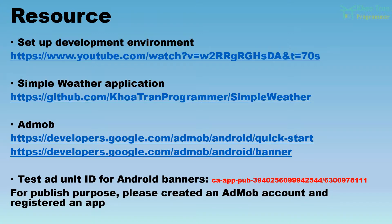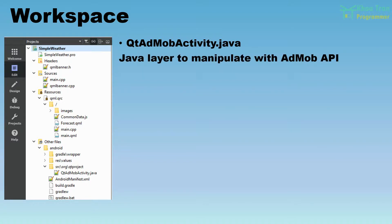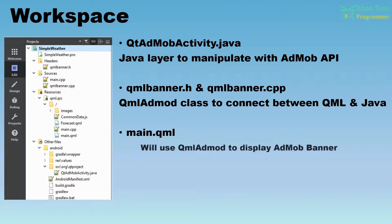Let's look at the workspace resources. Key files include: QT AdMob Activity Java, which is the Java layer to manipulate the AdMob API; QML Banner H and QML Banner CPP, which define the QMLAdMob class to connect between QML and Java; and Main QML, which uses QMLAdMob to display the AdMob banner.